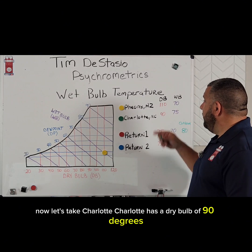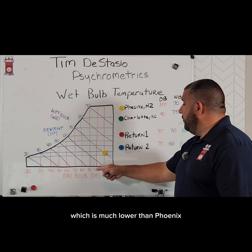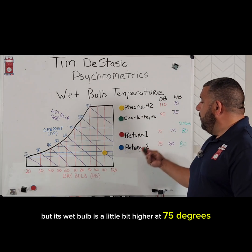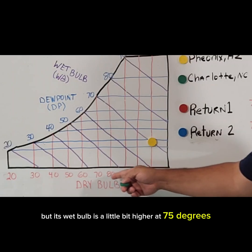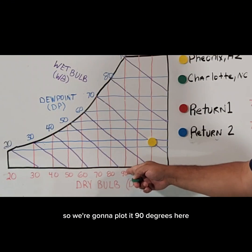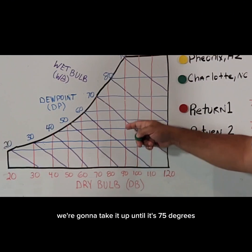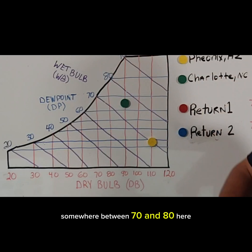Charlotte has a dry bulb of 90 degrees, which is much lower than Phoenix, but its wet bulb is a little bit higher at 75 degrees. So we're going to plot it at 90 degrees here, and we're going to take it up until it's 75 degrees, somewhere between 70 and 80 here.